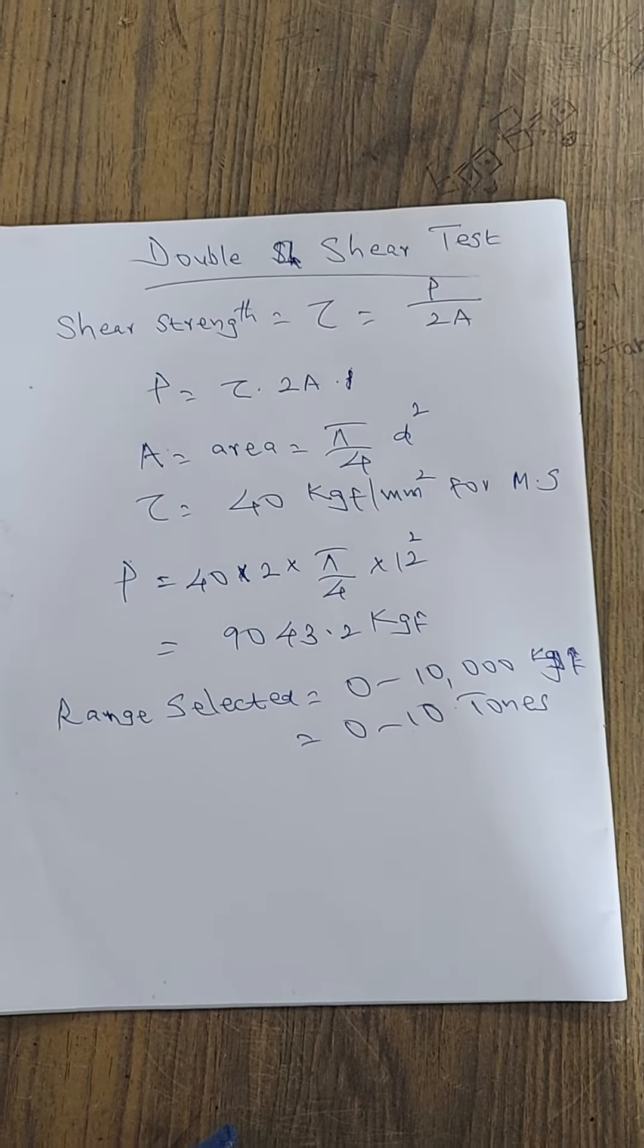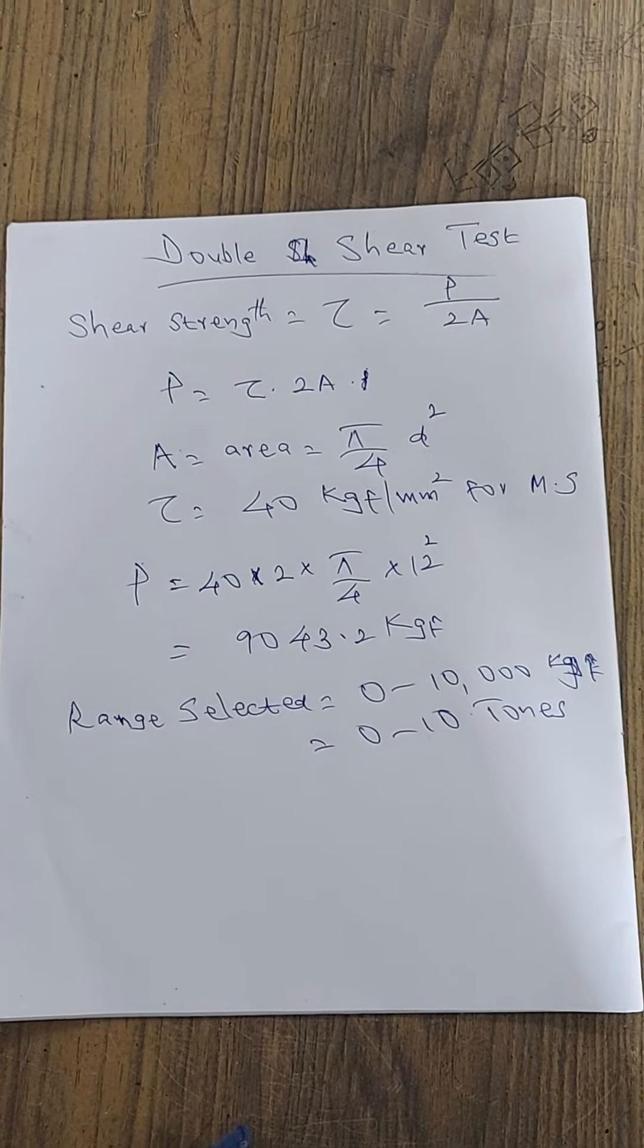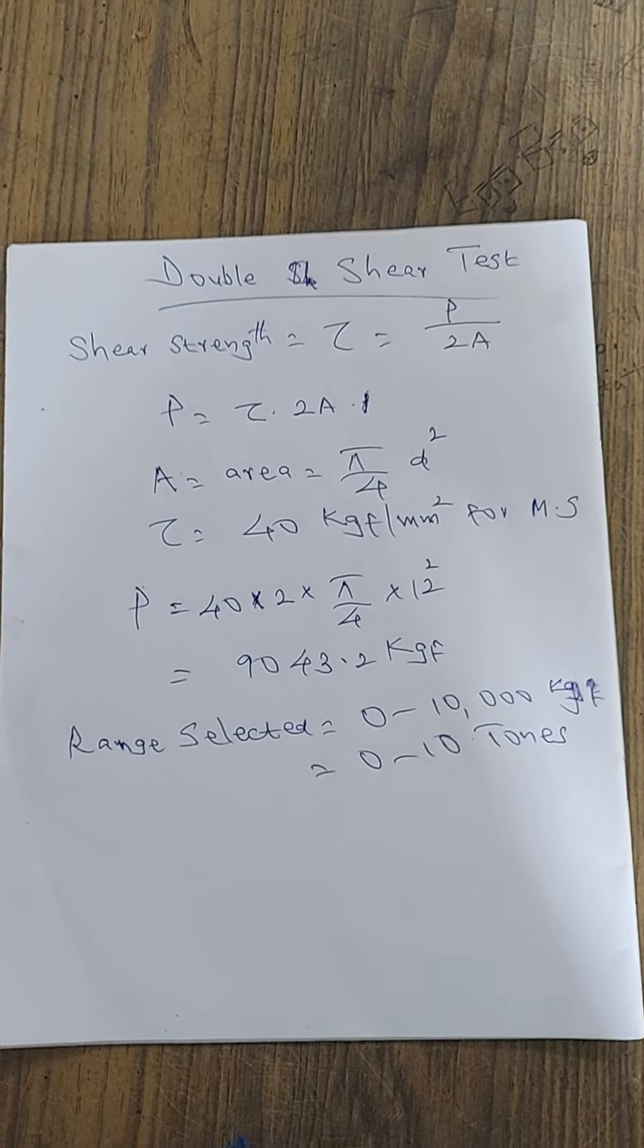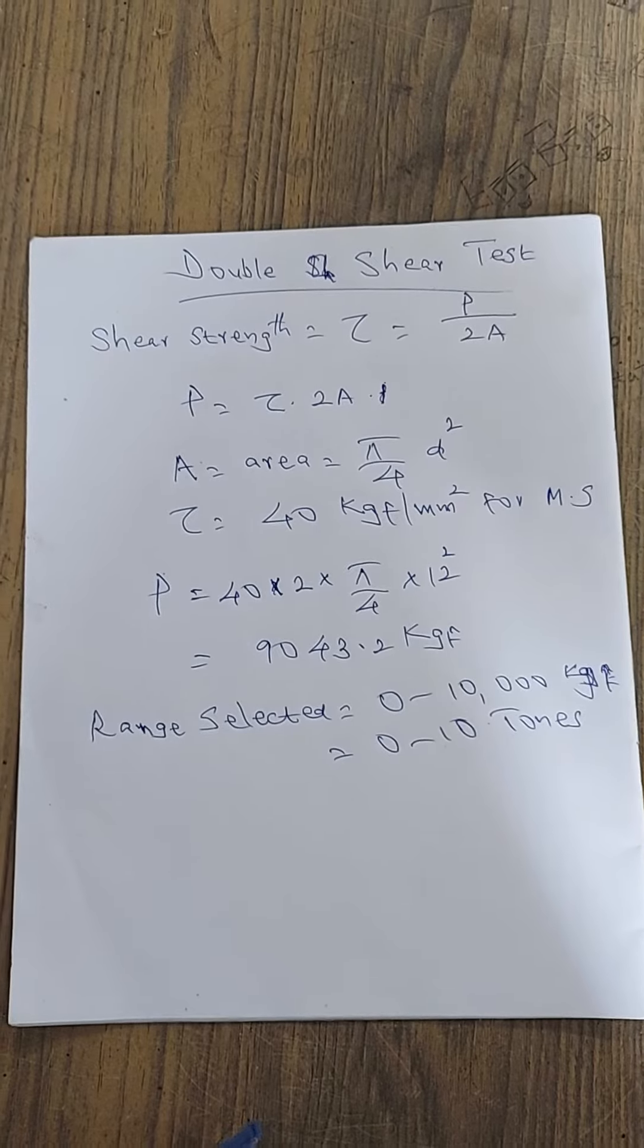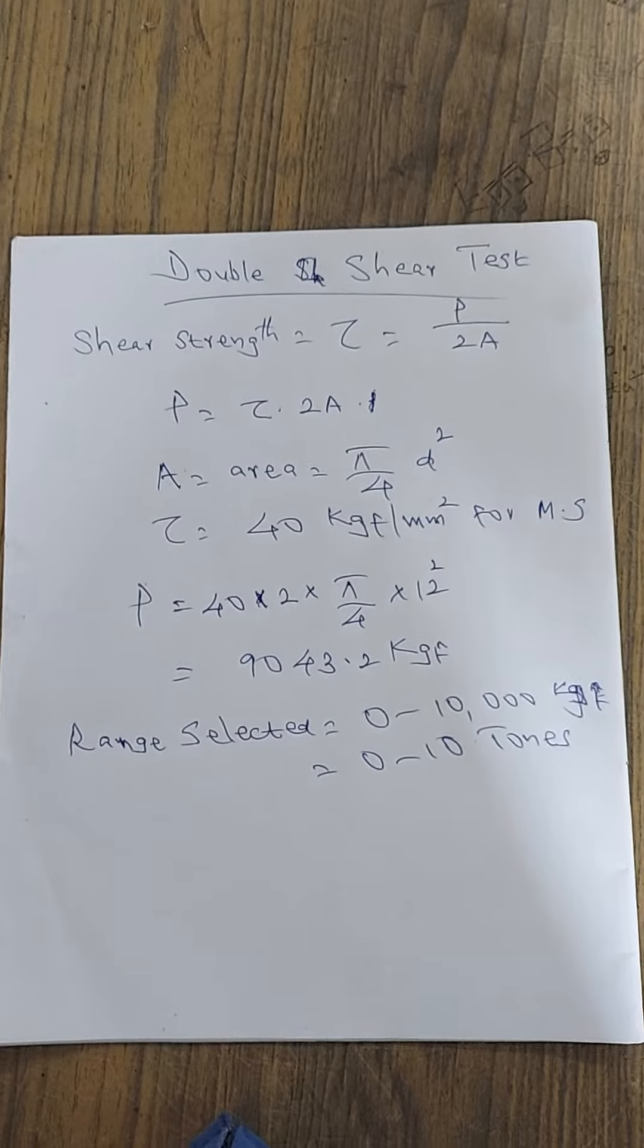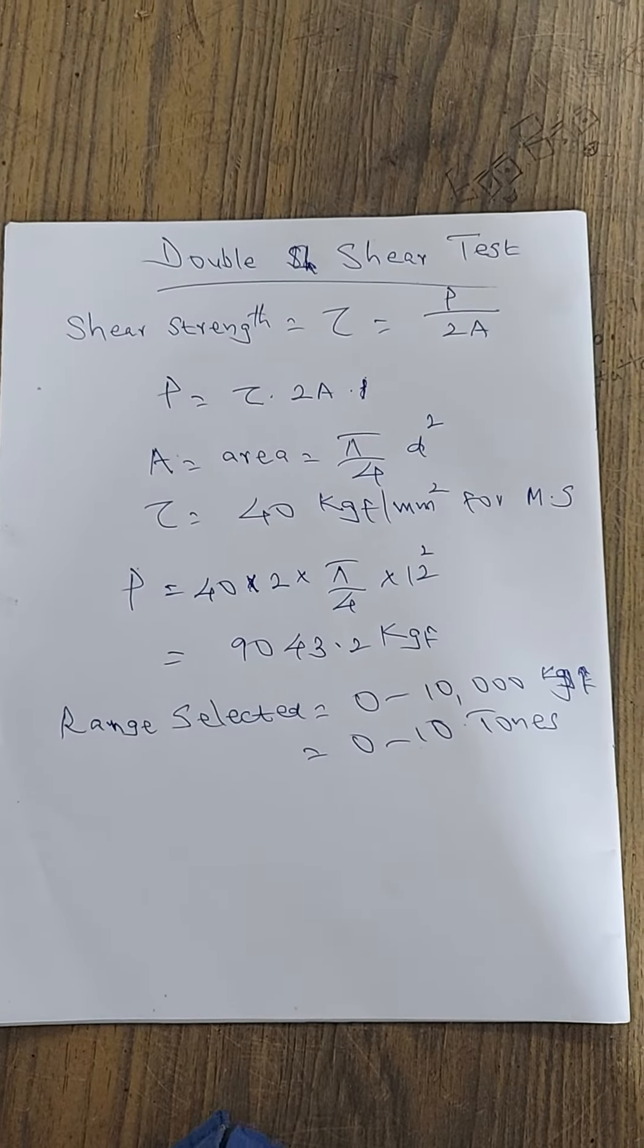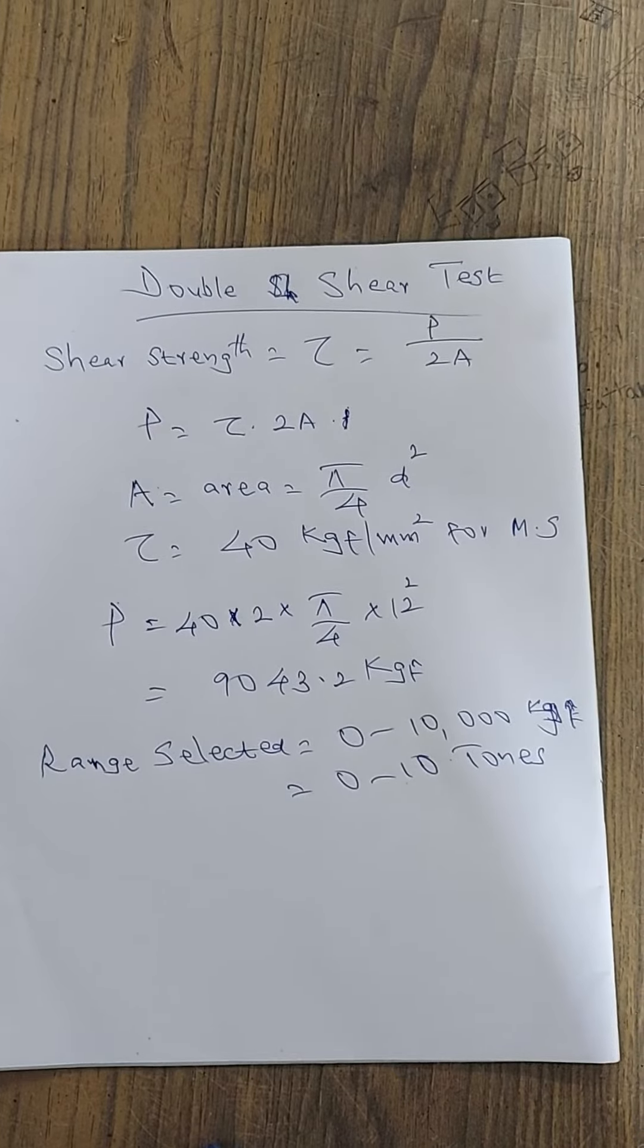From that equation, we can say the expected load at which failure will occur, P, can be determined as tau into 2A. The area is pi by 4D squared, where D is the diameter. I measured the diameter of the specimen using a vernier and got 12 millimeters.